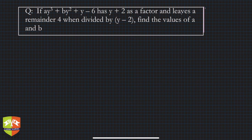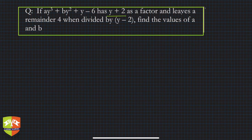Hello and welcome to another session on problem solving related to the factor theorem. In this question, it is given that ay³ + by² + y − 6 has (y + 2) as a factor, and leaves a remainder of 4 when divided by (y − 2). Find the values of a and b.